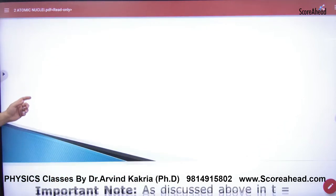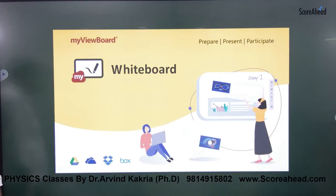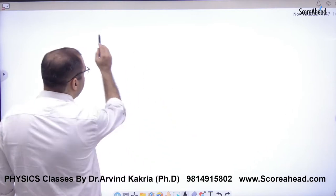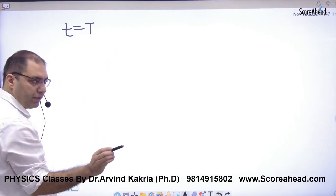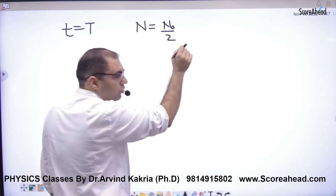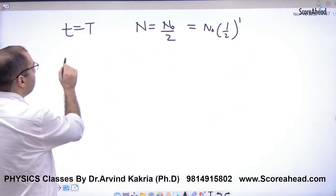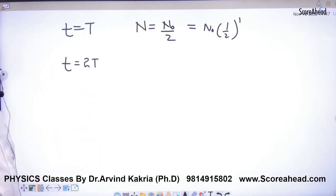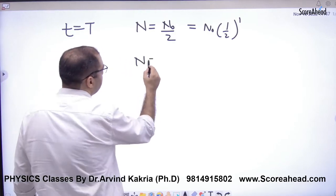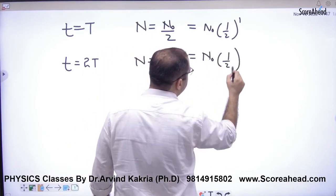So this is half-life period, right? Now see an important term. I am going to make a formula which is a very useful formula. Suppose you have first half-life period, small t is equal to T, so number of atoms N will be N0 by 2. Second half-life period, which means 2T, so number of atoms N will be N0 by 4, its half, which is N0 half raised to power 2.